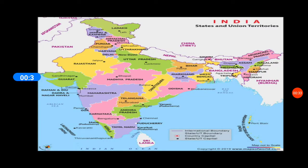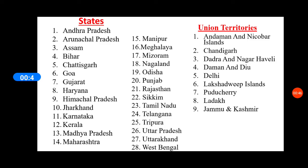Here is the Map of India. यहां पर Map दिया हुआ है बच्चों, India का. तो आप सभी बच्चों ने India के Map में States को according to color करना है. यहां पर सारी States alphabetically दी हुई हैं, तो आप सभी बच्चों ने States को fill करना है.